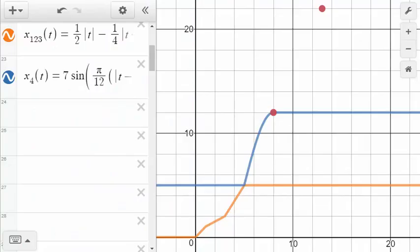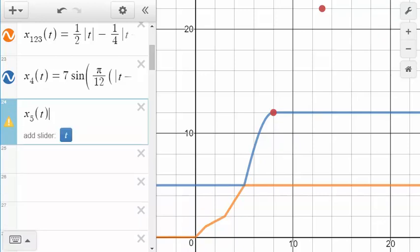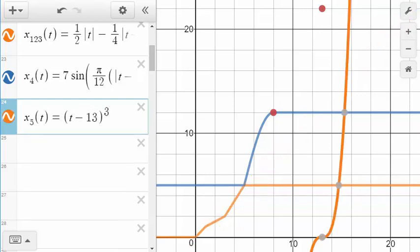Here I am, back in Desmos, and we want a cubic that goes through these two points, 8, 12, and 13, 22. I want the center of that cubic to be at 13, 22. So using my knowledge of function transformations, I'll write x5 of t, I'm going to move to the right 13 units, t minus 13. It's a cubic graph, so I'll raise it to the third power, and I need to go up 22.